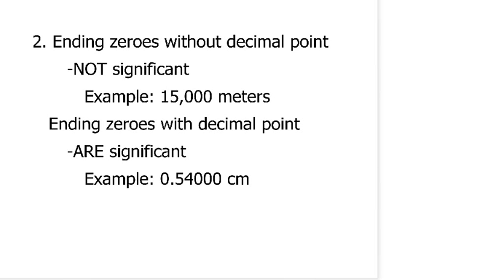Rule number two. If you have zeros at the end of the number, such as here in the example, and there is no decimal point, those zeros are not significant. Not significant.